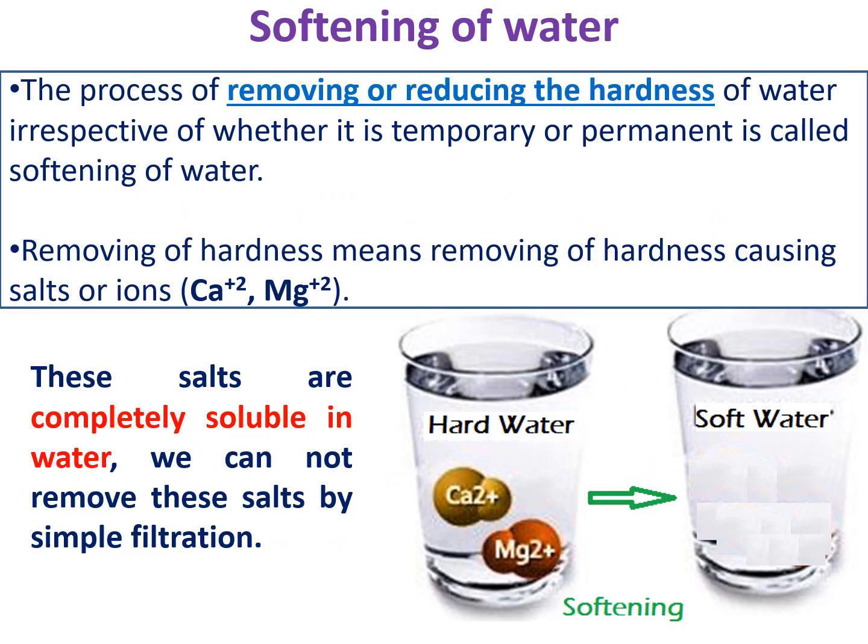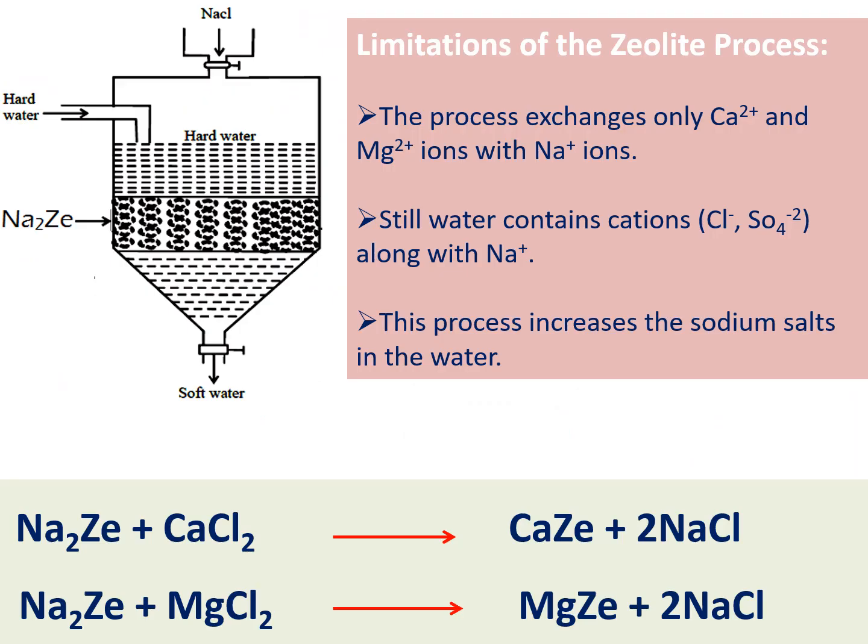In the last class we already discussed about what is softening of water — converting hard water into soft water is called softening. Calcium and magnesium salts are responsible for the hardness of water. These calcium and magnesium salts are completely soluble in water. If you convert these completely soluble salts into insolubles, you can easily remove the hardness of the water.